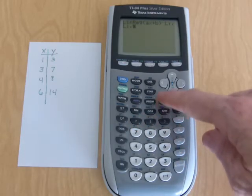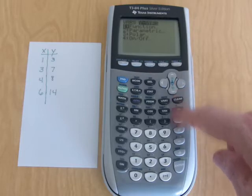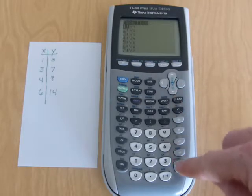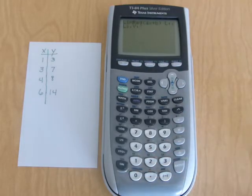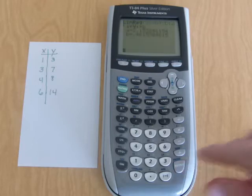And then finally I'm going to go to my variables, my Y variables, my function list. And I'm going to choose number 1 for Y1. I could have chosen any of those Y variables. And then I'm going to hit enter one more time to execute that command.